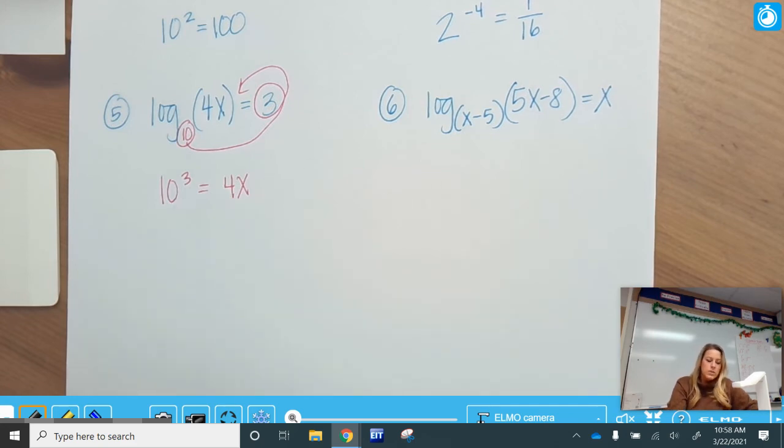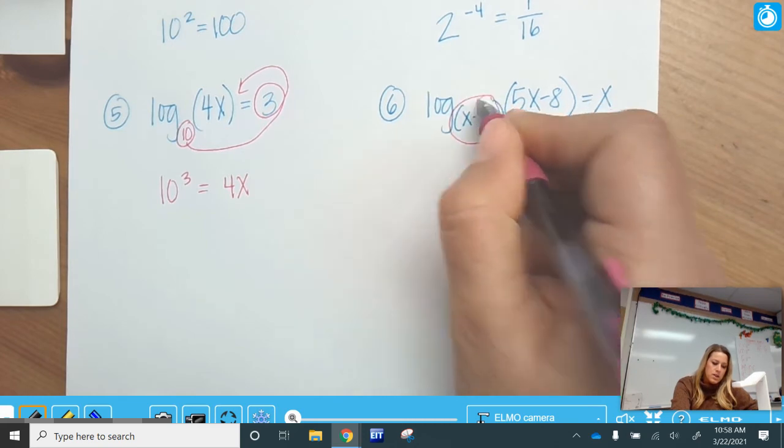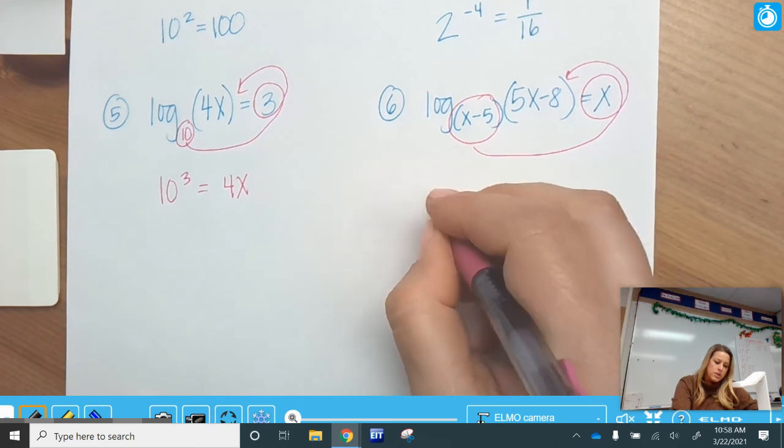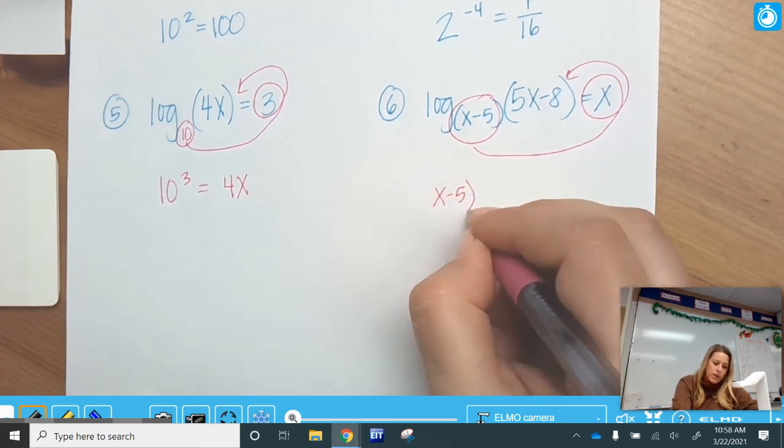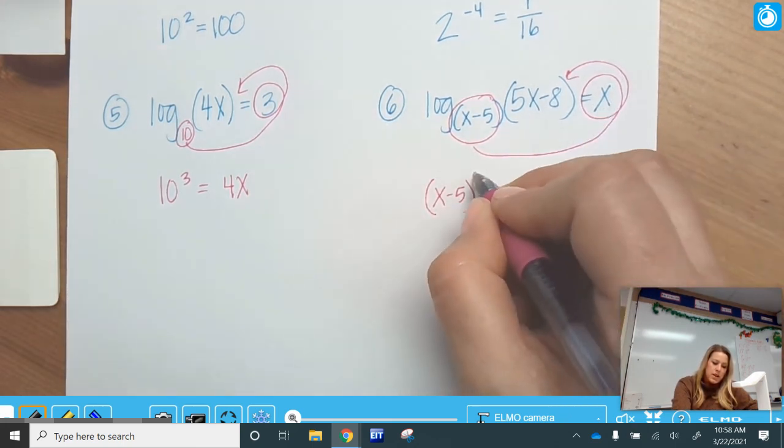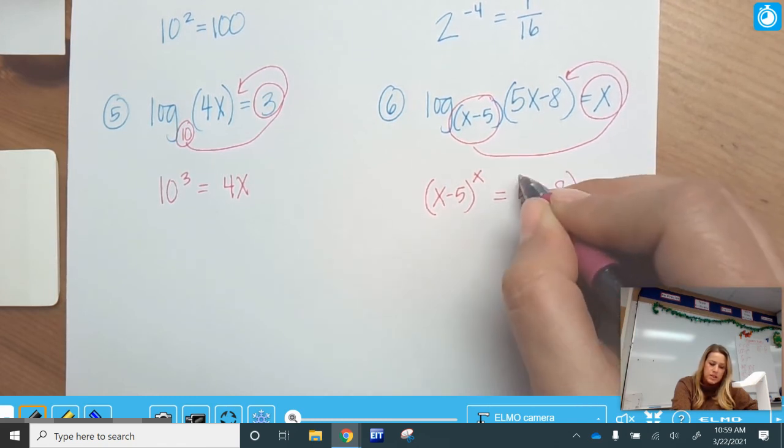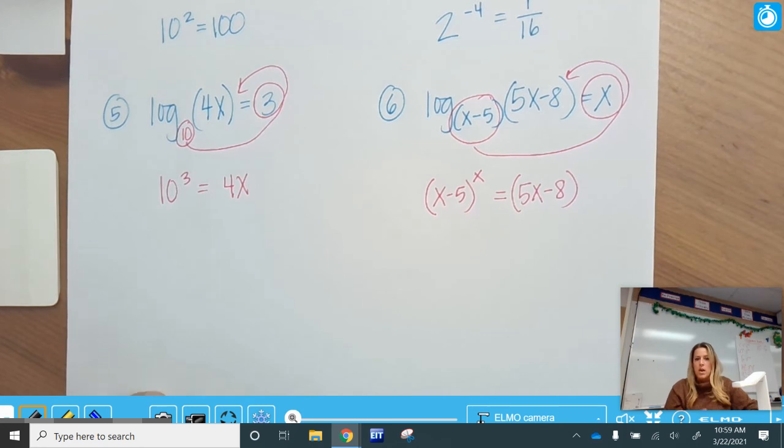Okay, so the next one is, here is our base exponent answer. So, yes, it will look funky, but this is how we would do it. Base, exponent, and then our answer is 5x minus 8. There we go. All right, go ahead and see if you can do the problems that I added to the quizzes.